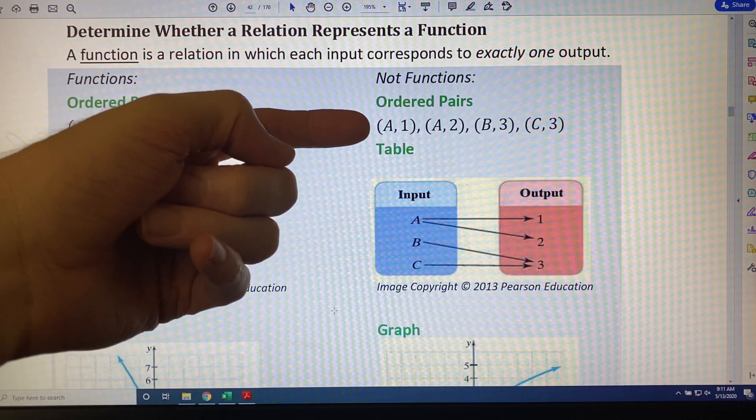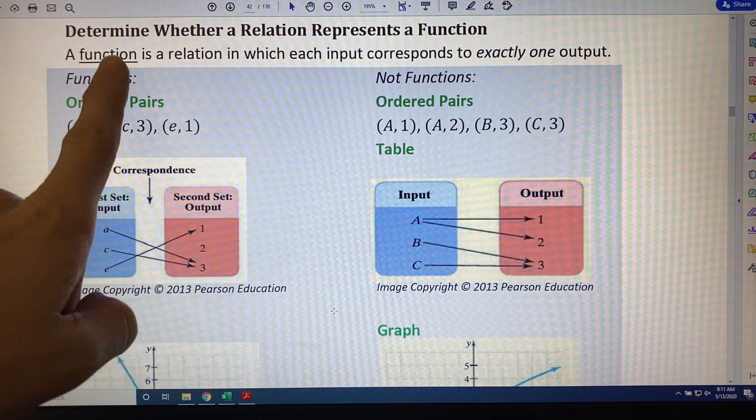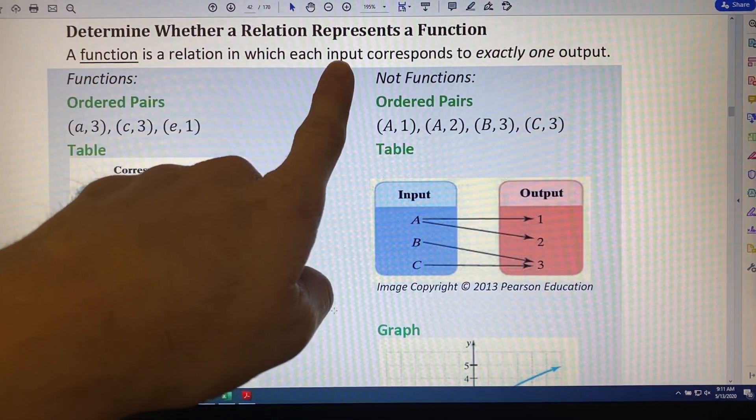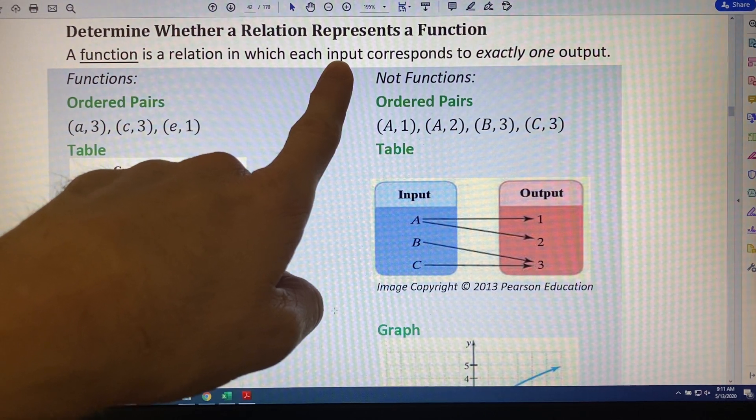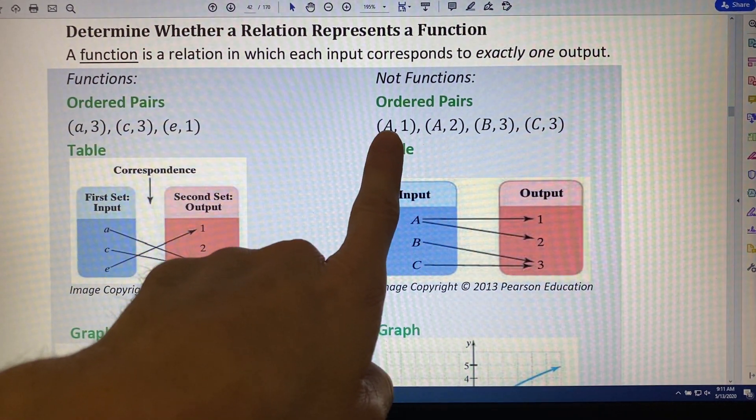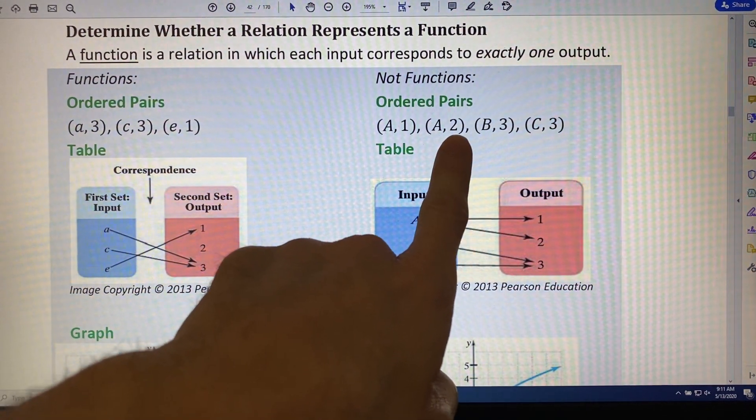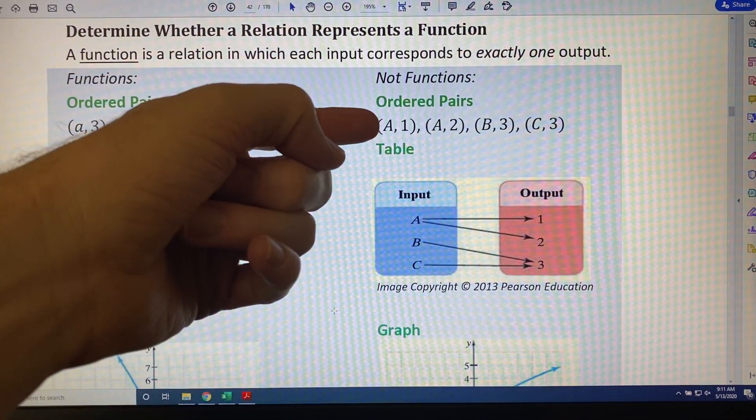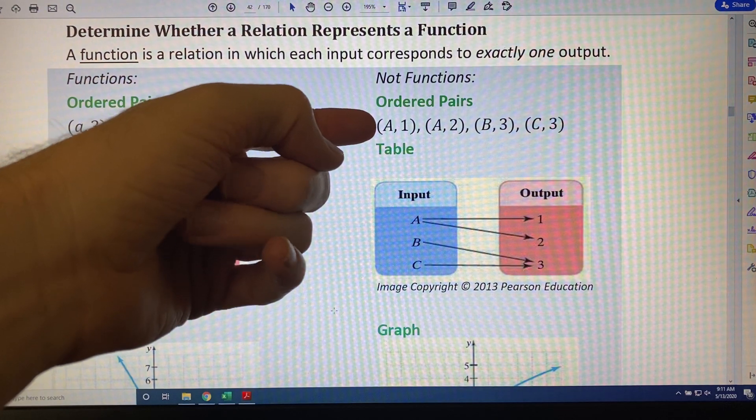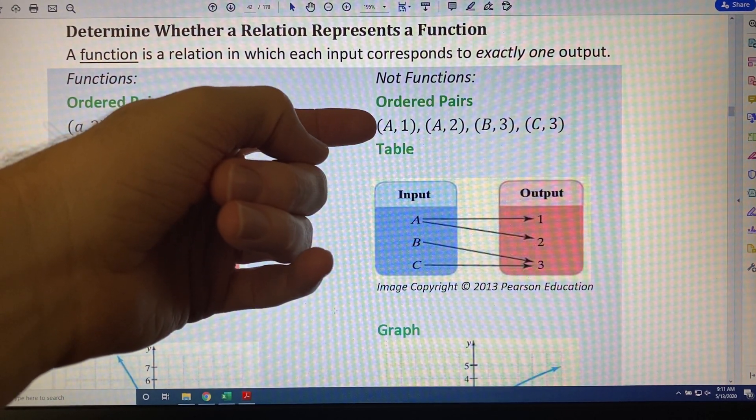Remember that the definition of a function is a relation in which each input corresponds to exactly one output. You might notice that the input capital A leads to 1, and the input capital A also leads to 2. For this reason, this relation is not a function, because it violates the definition.